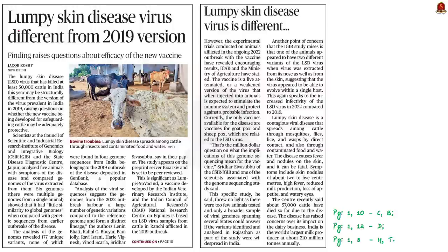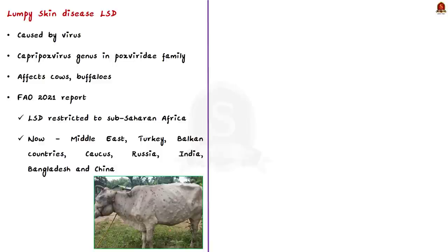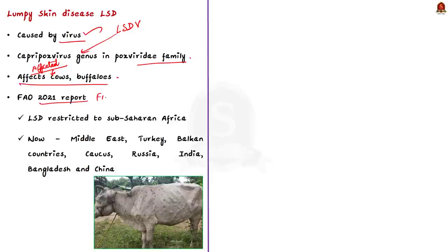Two news articles discuss the lumpy skin disease virus, which may be structurally different from the version prevalent in India in 2019. The 2022 genome has many genetic variations compared to the reference genome. Lumpy skin disease is caused by the lumpy skin disease virus (LSDV), which belongs to the Capripox virus genus in the Poxviridae family. It affects cows and Asian water buffaloes. As per the 2021 FAO report, LSDV was long restricted to sub-Saharan Africa, but in the past decade has impacted the Middle East, Turkey, Balkan countries, Russia, and entered India, Bangladesh, and China in July 2019.